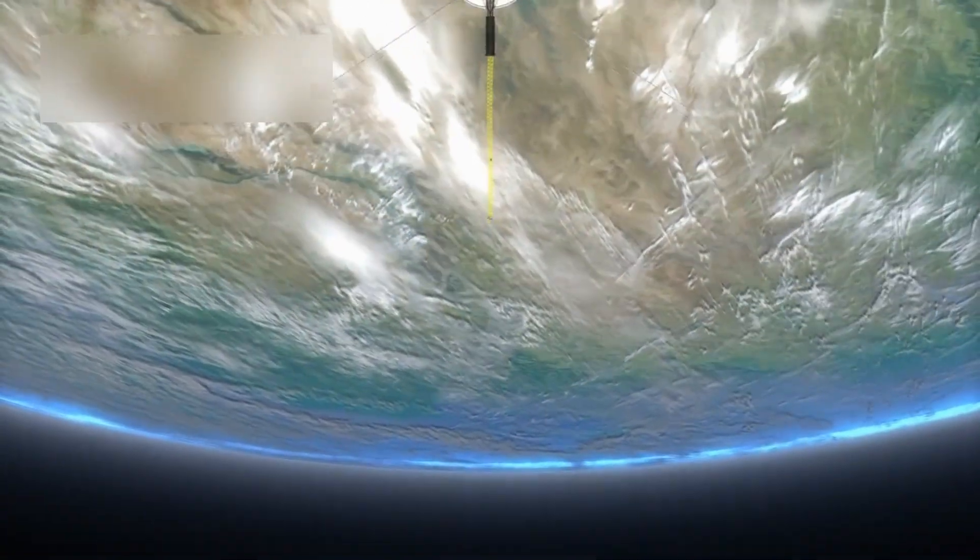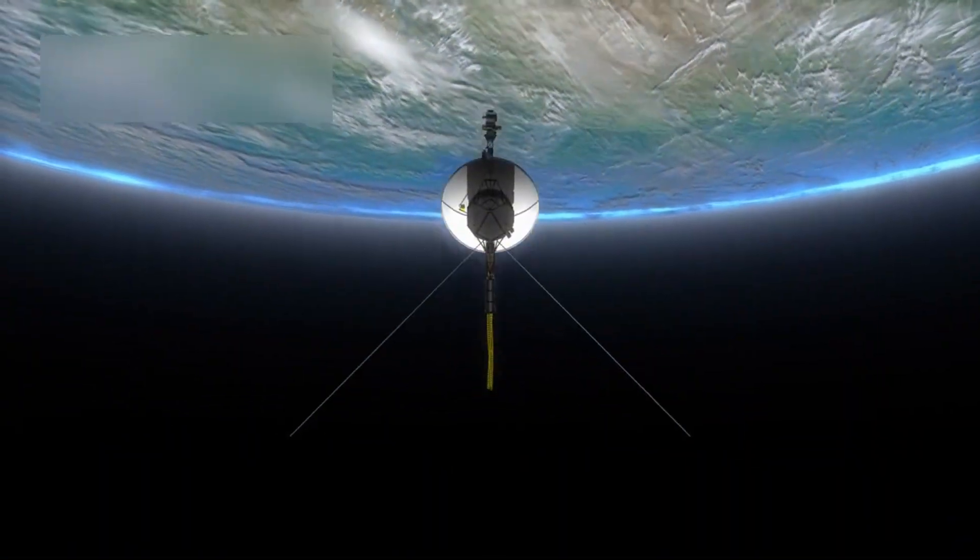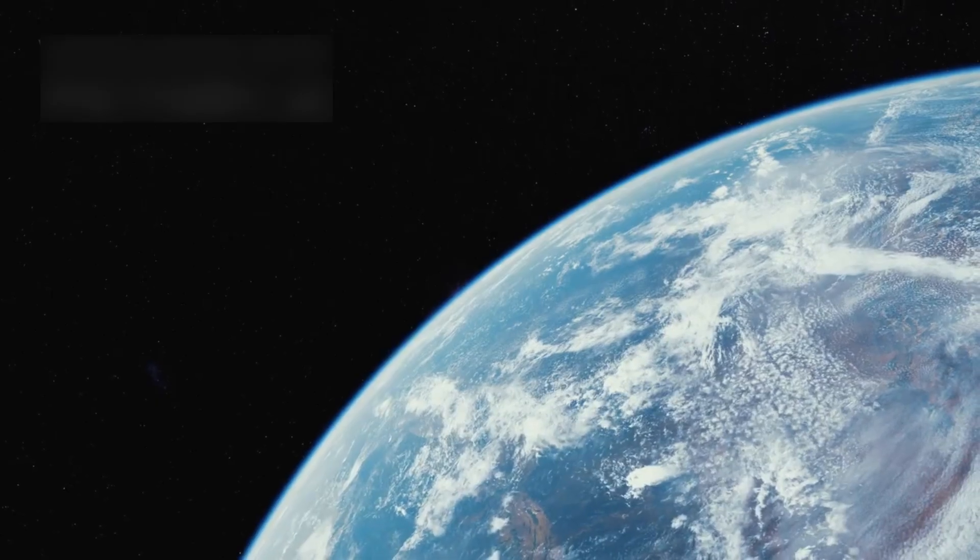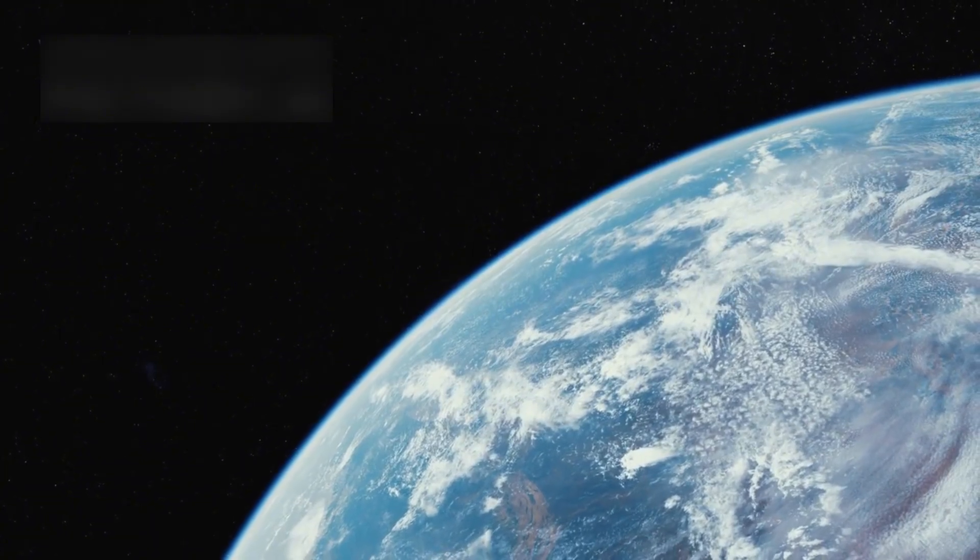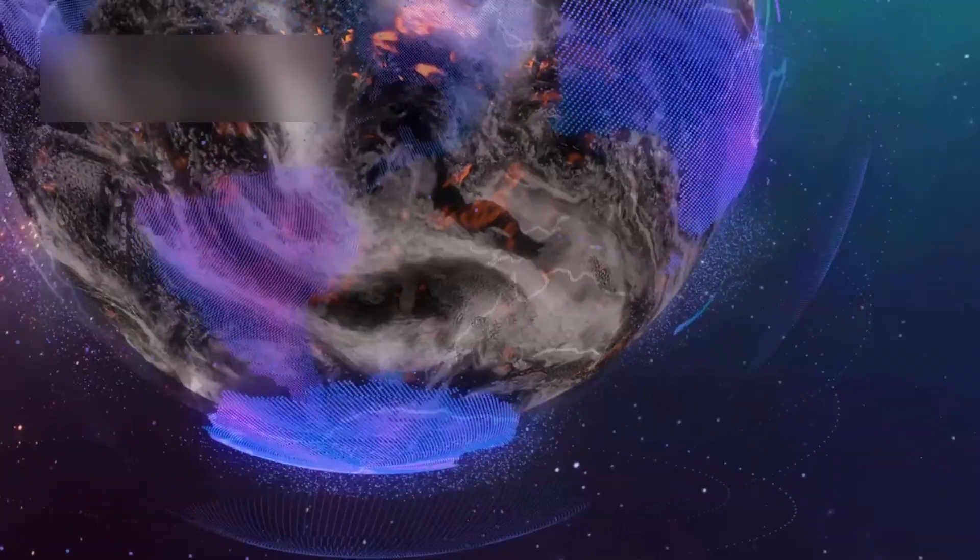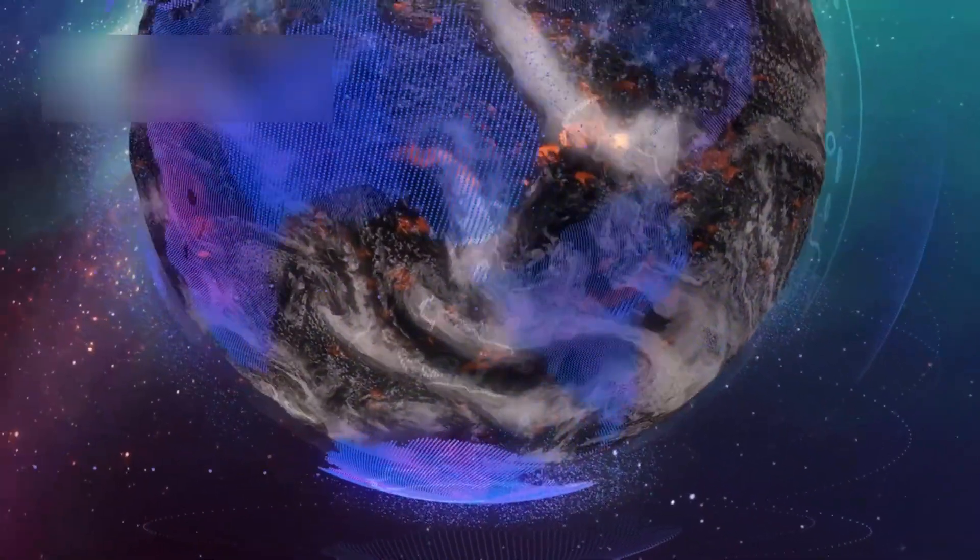The mission has already answered many questions but has raised even more. From uncovering volcanoes on Io to taking the famous pale blue dot photo of Earth, Voyager 1 has changed how we see ourselves. That small dot in space is our home, seen from billions of miles away. It's a powerful reminder of our place in the cosmos and how tiny we are in the vastness of space.